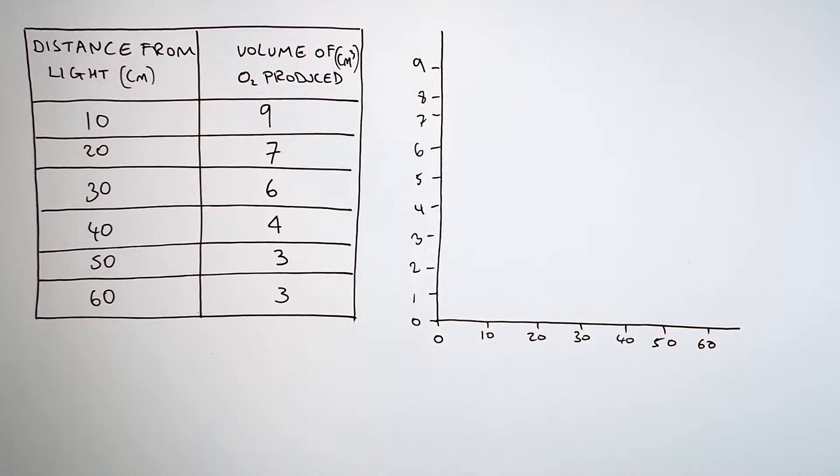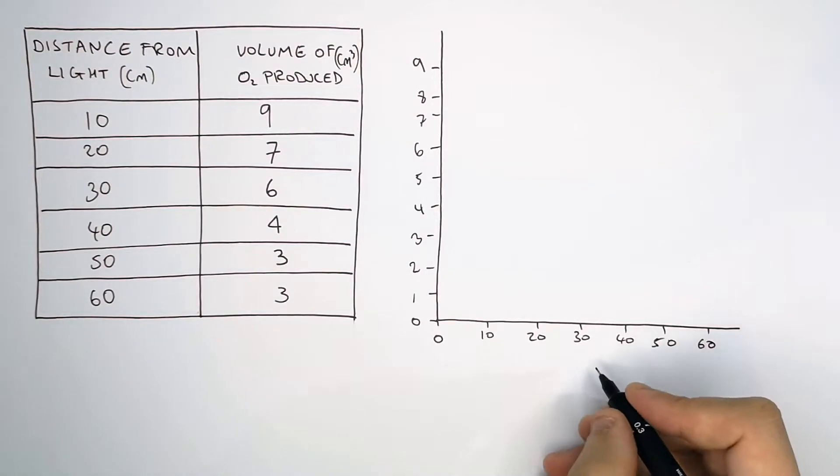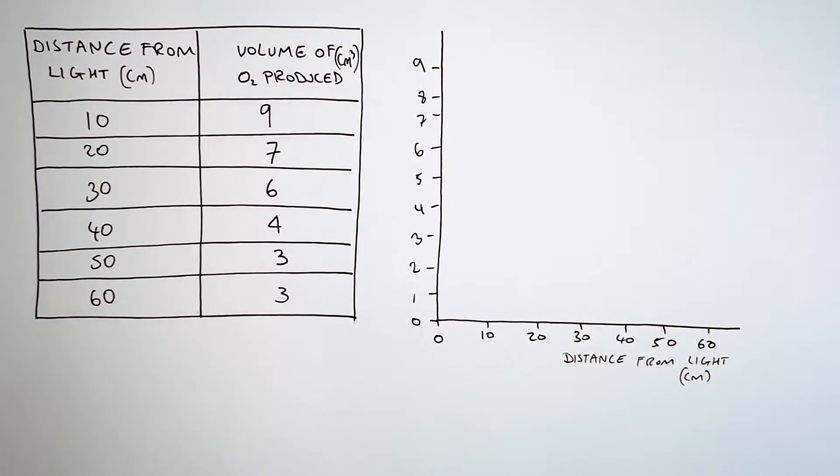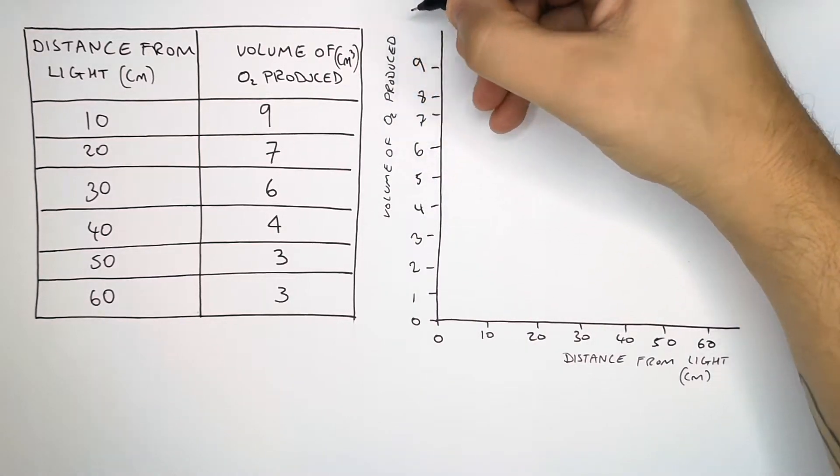Let's now plot a graph of the distance the plant was away from the light source against the volume of oxygen collected by the syringes. Along the x-axis is where you always put your independent variable, what you change. So in this case, it was the distance away from the light source. And what you measure, your dependent variable, always goes on the y-axis. So on the y-axis for this experiment, it is the volume of oxygen collected.